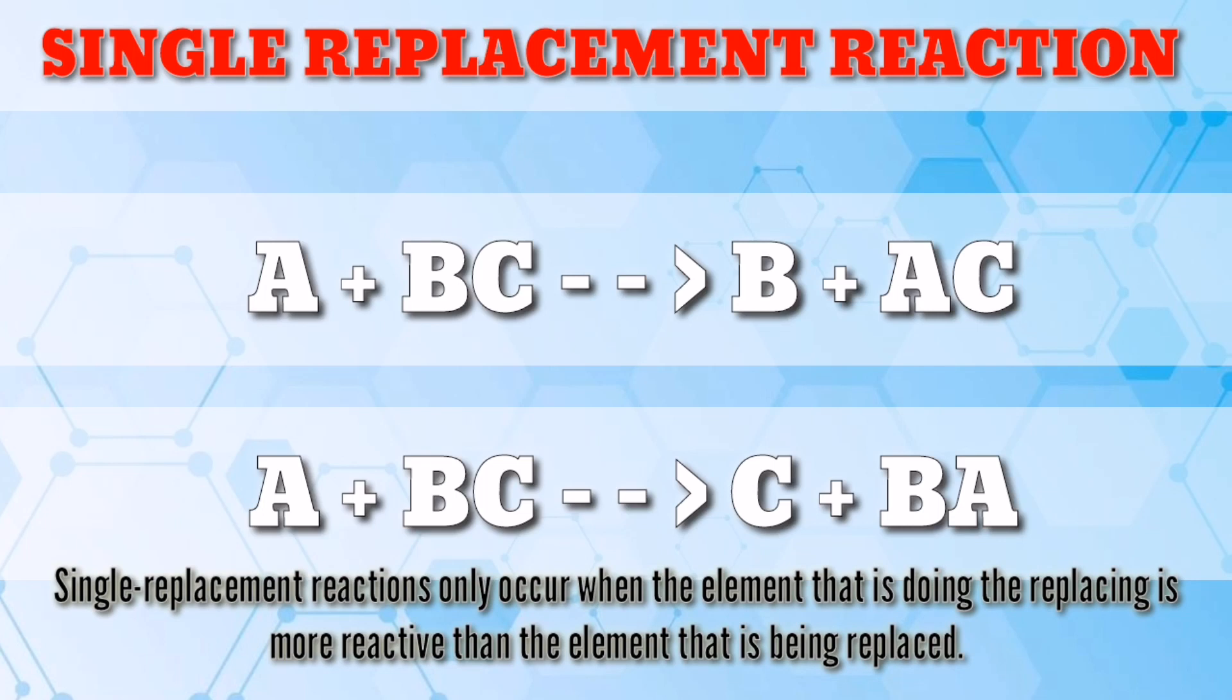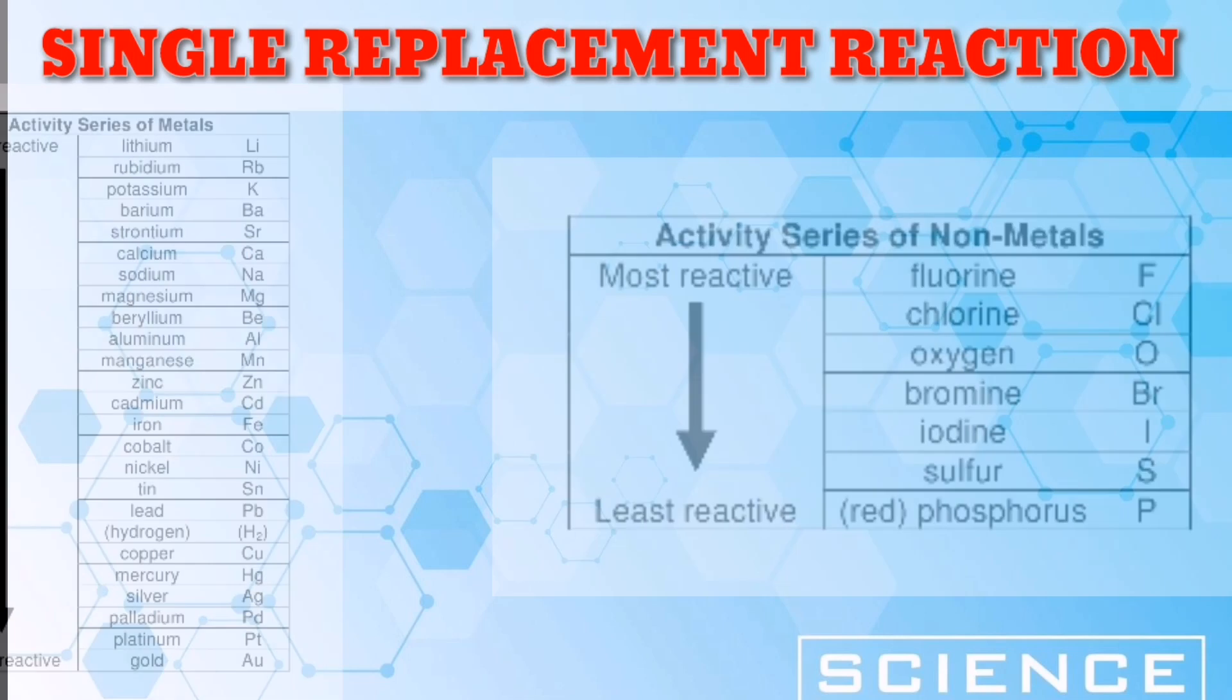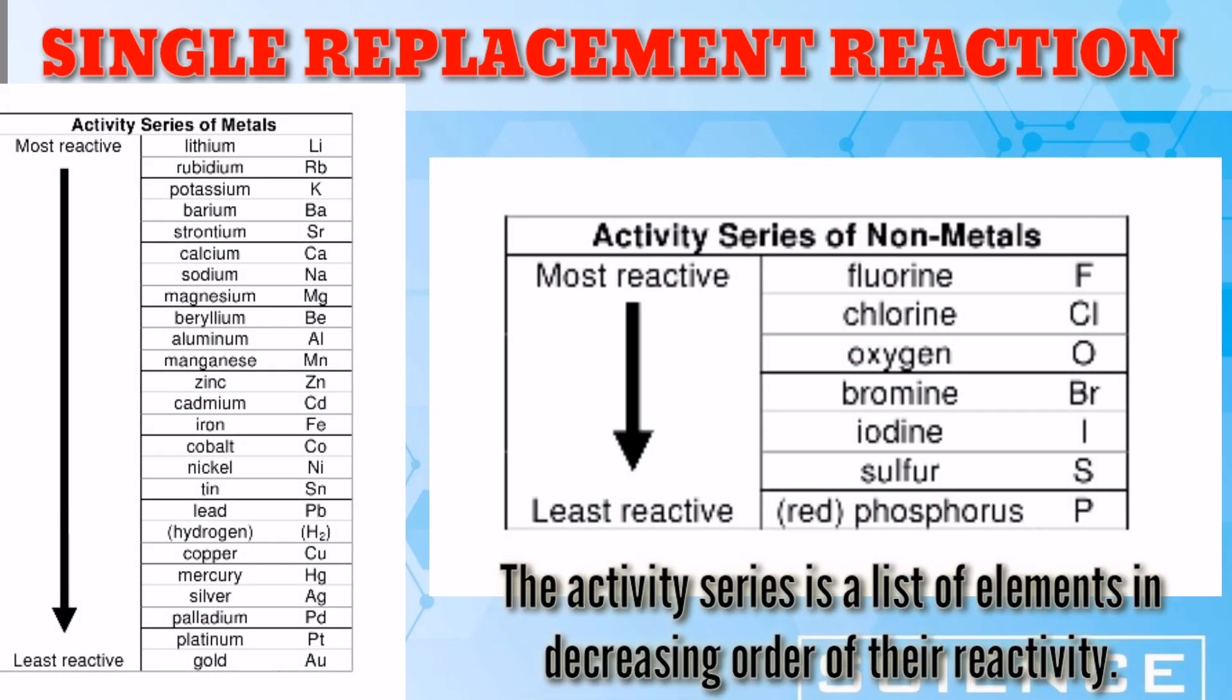Single replacement reactions only occur when the element that is doing the replacing is more reactive than the element that is being replaced. Therefore, it is useful to have a list of elements in order of their relative reactivity. The activity series is a list of elements in decreasing order of their reactivity.